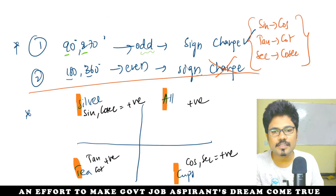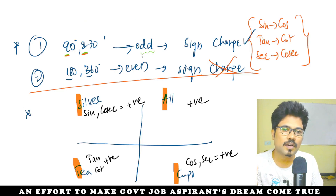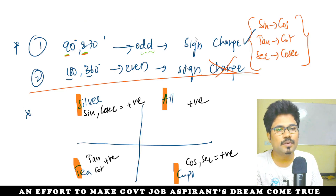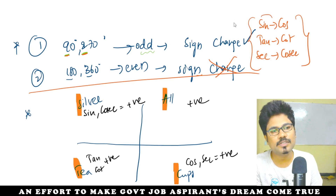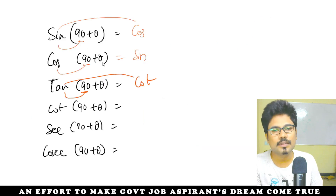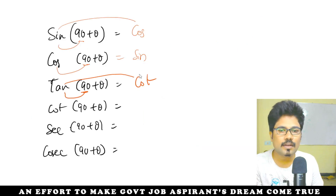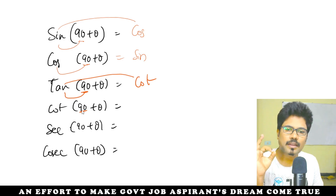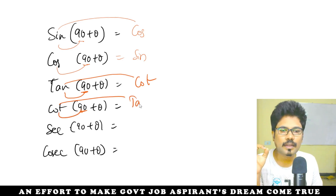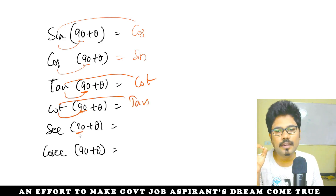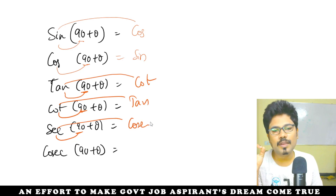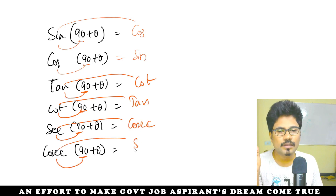At 90 and 270 — odd multiples — we will sign change. Sign change means sin becomes cos. So sin(90 plus theta) changes to cos theta; cos(90 plus theta) changes to sin theta; and so on for tan becoming cot, cot becoming tan.